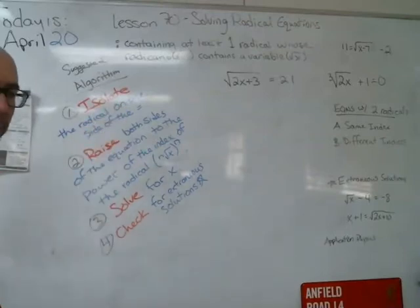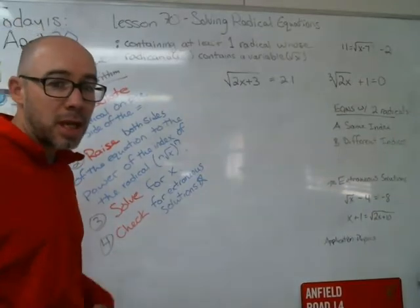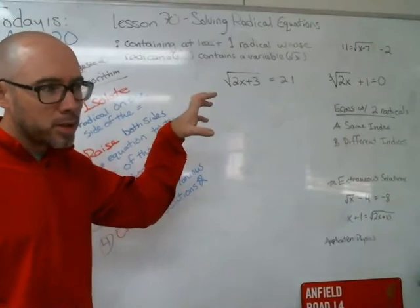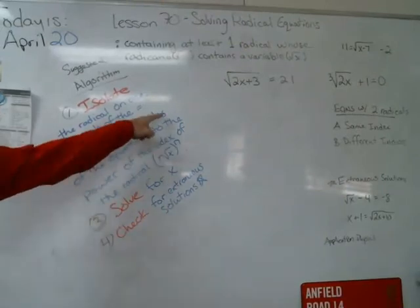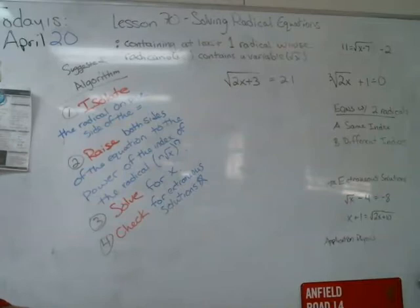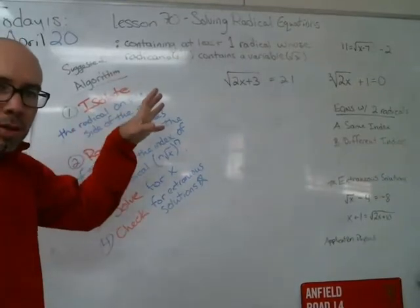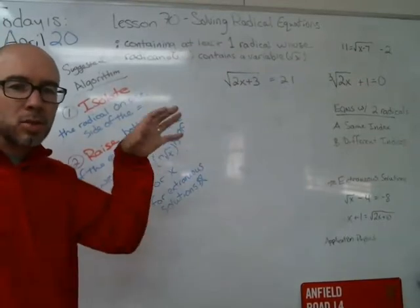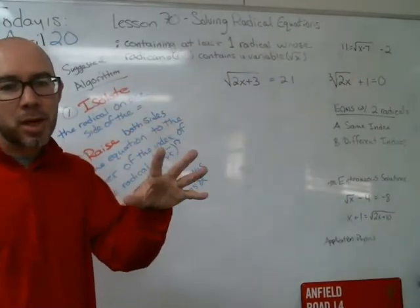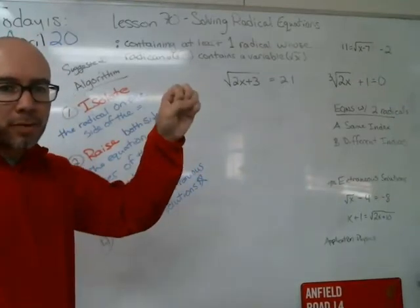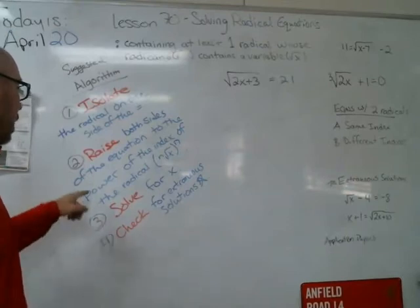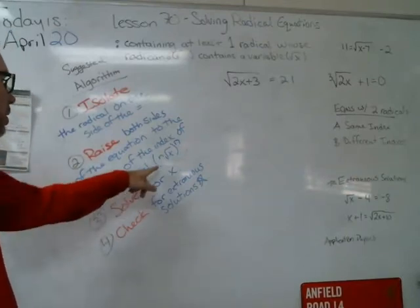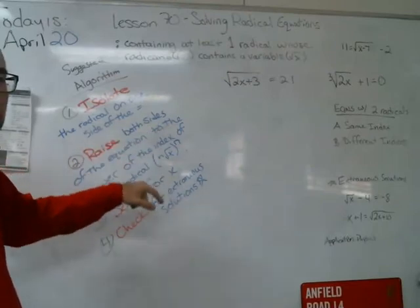Once I have the equal sign set up, similar to what we do when we have just X, we want the radical part all by itself on one side. Step number two: raise both sides of the equation to the power of the index of the radical. We're going to do the same thing to both sides — not add or subtract, but raise to a power. If it's a square root, we square both sides; if it's a cube root, we cube both sides.